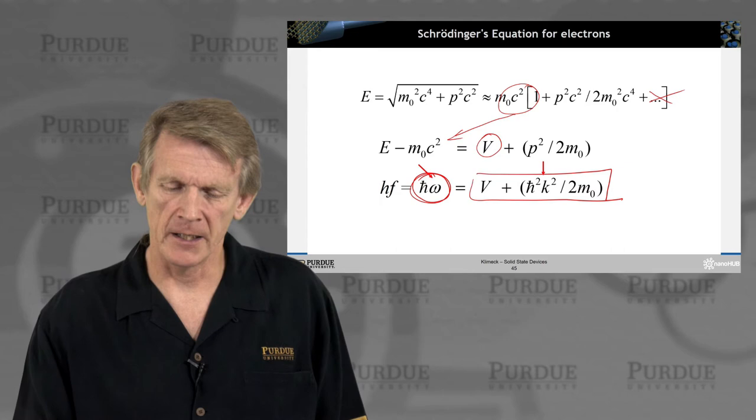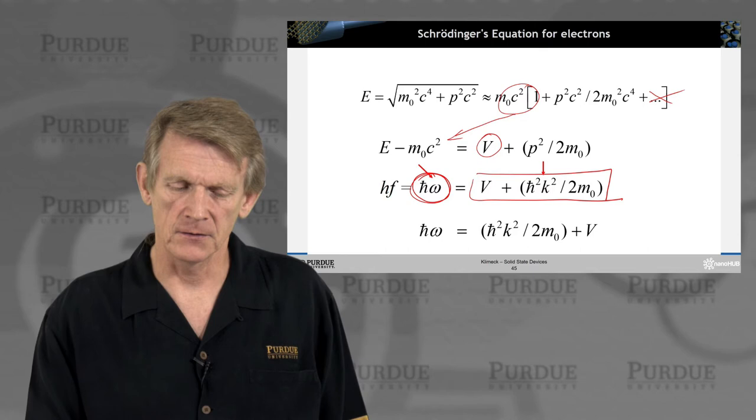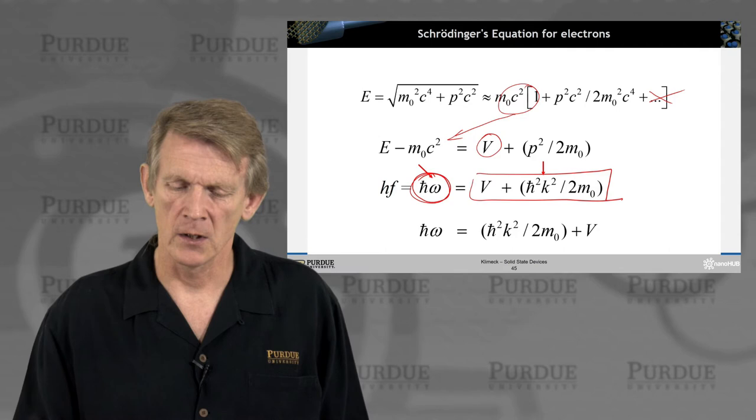So it's a little bit of black magic of pushing symbols around. At the end you have an equation that is the wave energy here as h bar squared k squared over 2M plus some potential energy.